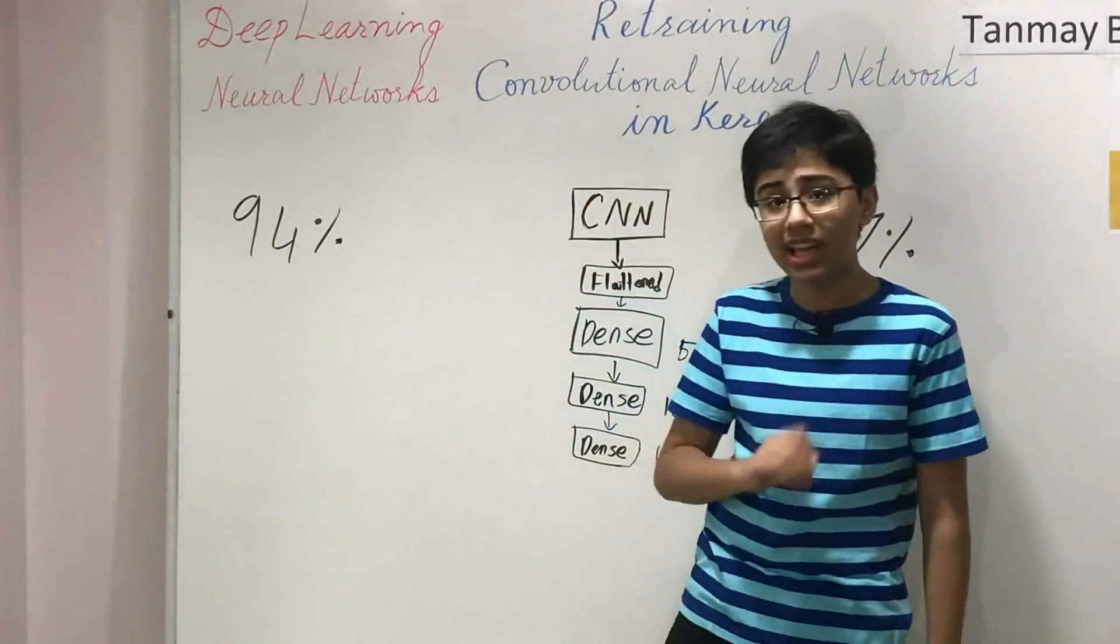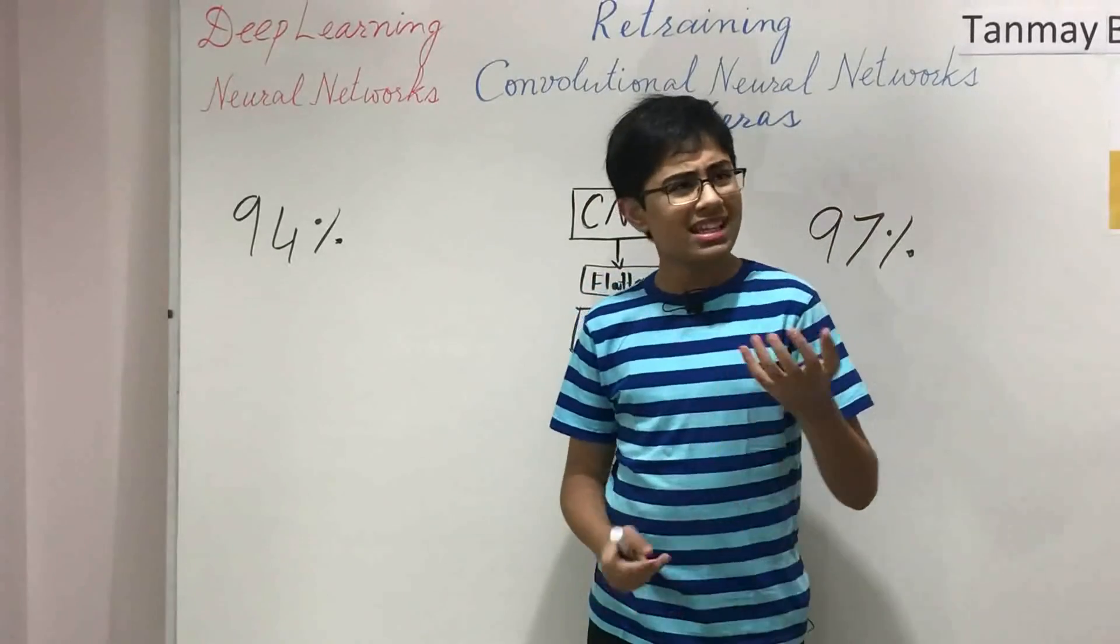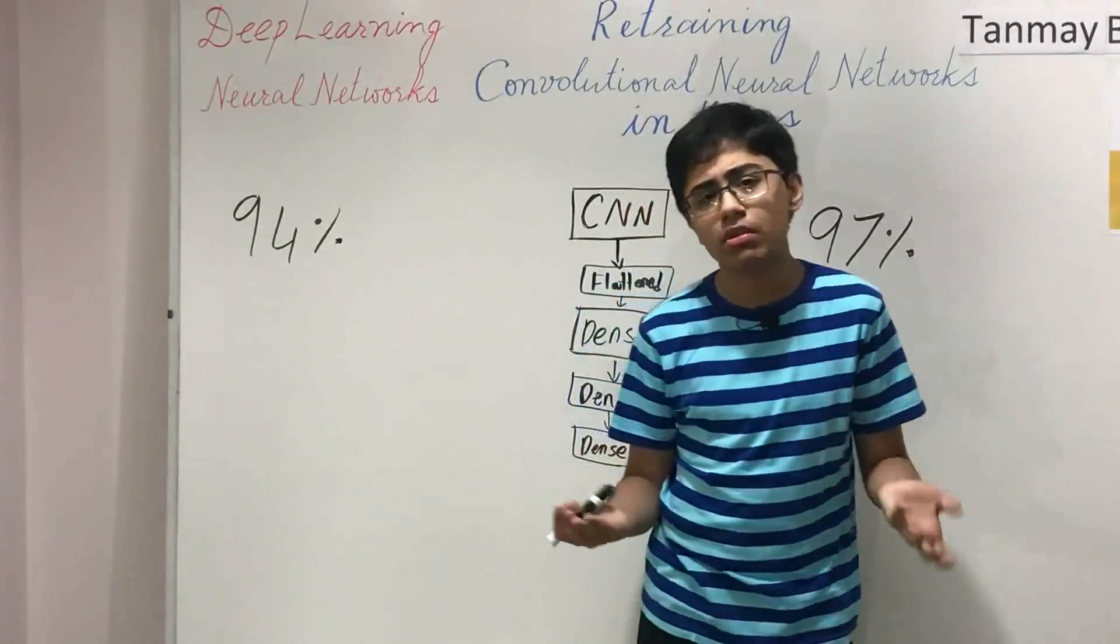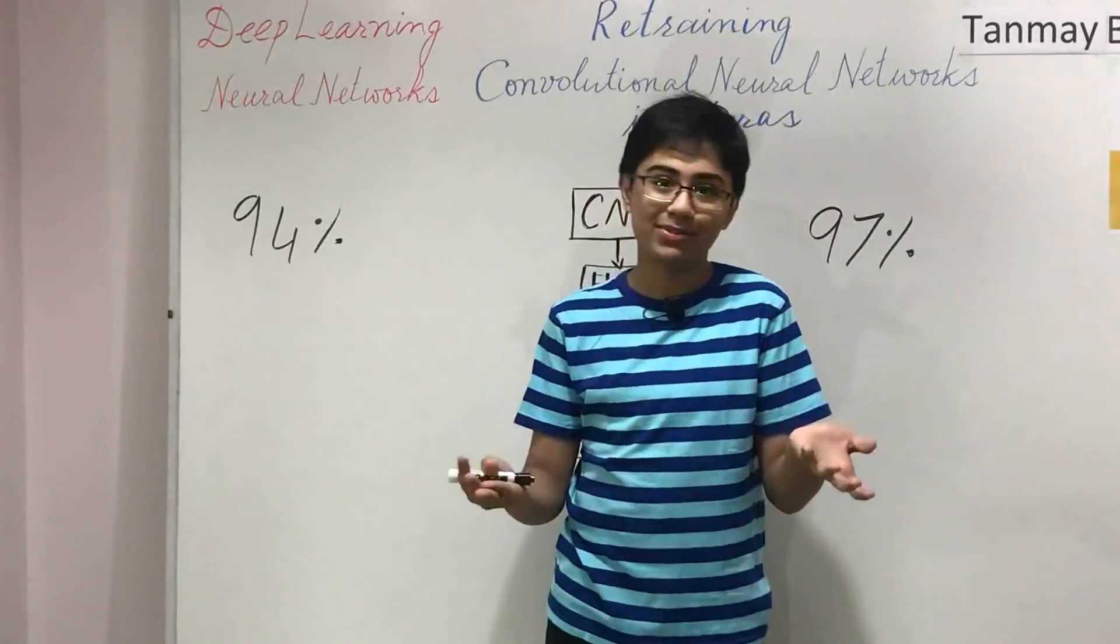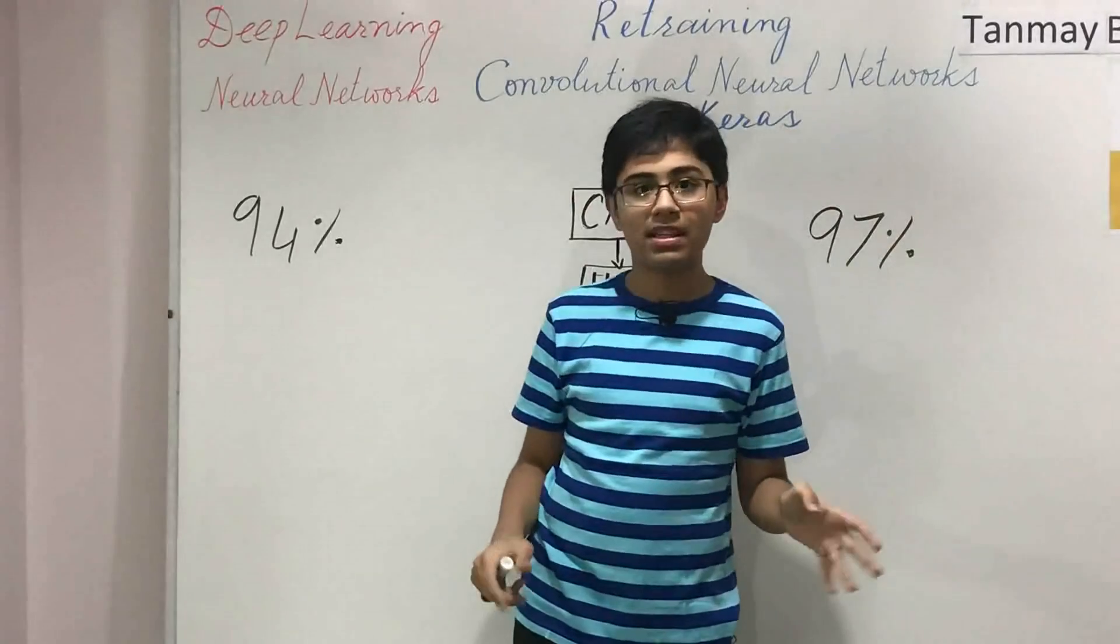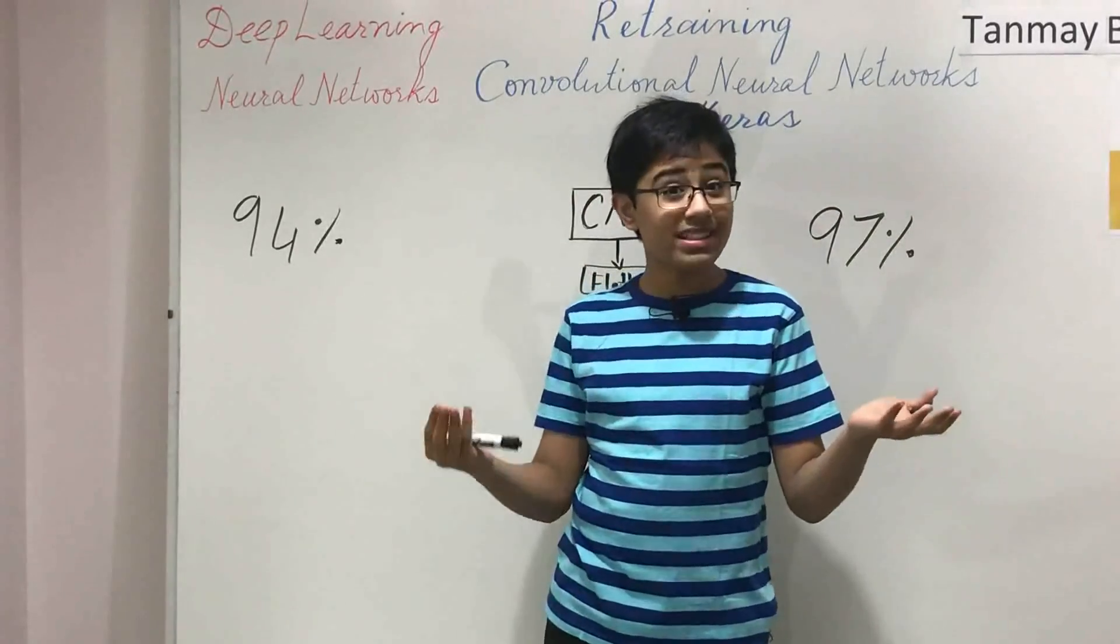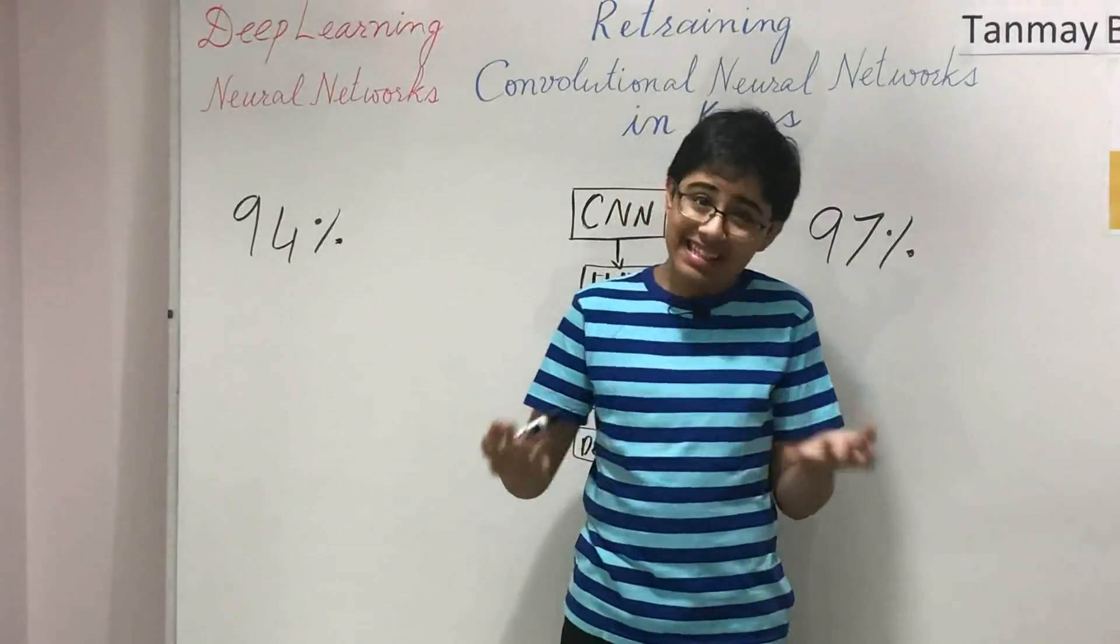Cats and dogs look very much alike, for a computer at least. Because convolutional neural networks don't look at too minute of details. I mean, they do, technically, because, of course, they're computers. But they don't understand abstract concepts. They understand individual patterns. And when patterns are extremely similar, they get confused.